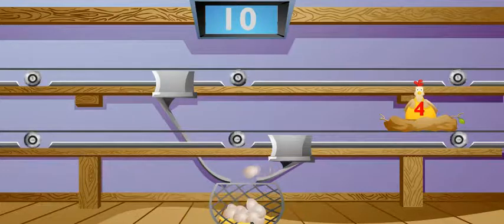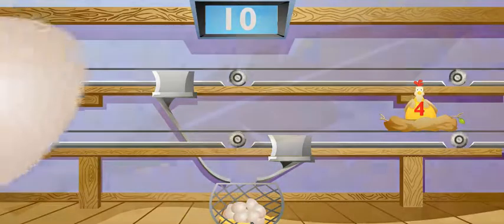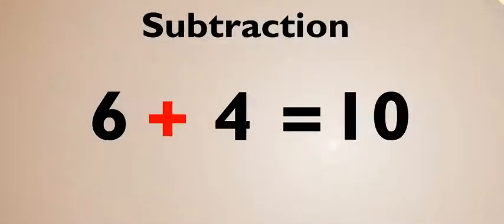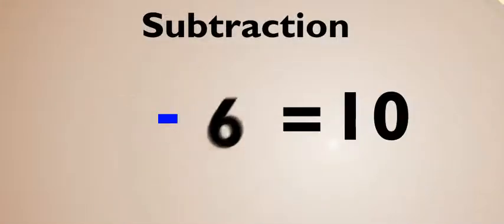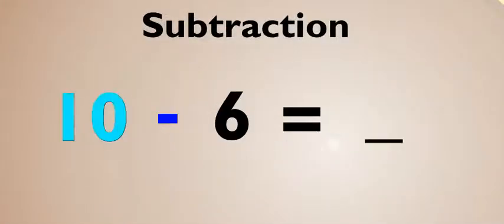You know, we could have used subtraction to find the answer, too. Starting with the same numbers? Yep. Check it out. This time, we'll subtract six from the total we need. So ten minus six equals what number? Four.